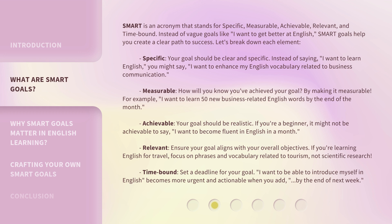Achievable: your goal should be realistic. If you're a beginner, it might not be achievable to say, "I want to become fluent in English in a month." Relevant: ensure your goal aligns with your overall objectives. If you're learning English for travel, focus on phrases and vocabulary related to tourism, not scientific research. Time-bound: set a deadline for your goal. "I want to be able to introduce myself in English" becomes more urgent and actionable when you add "by the end of next week."